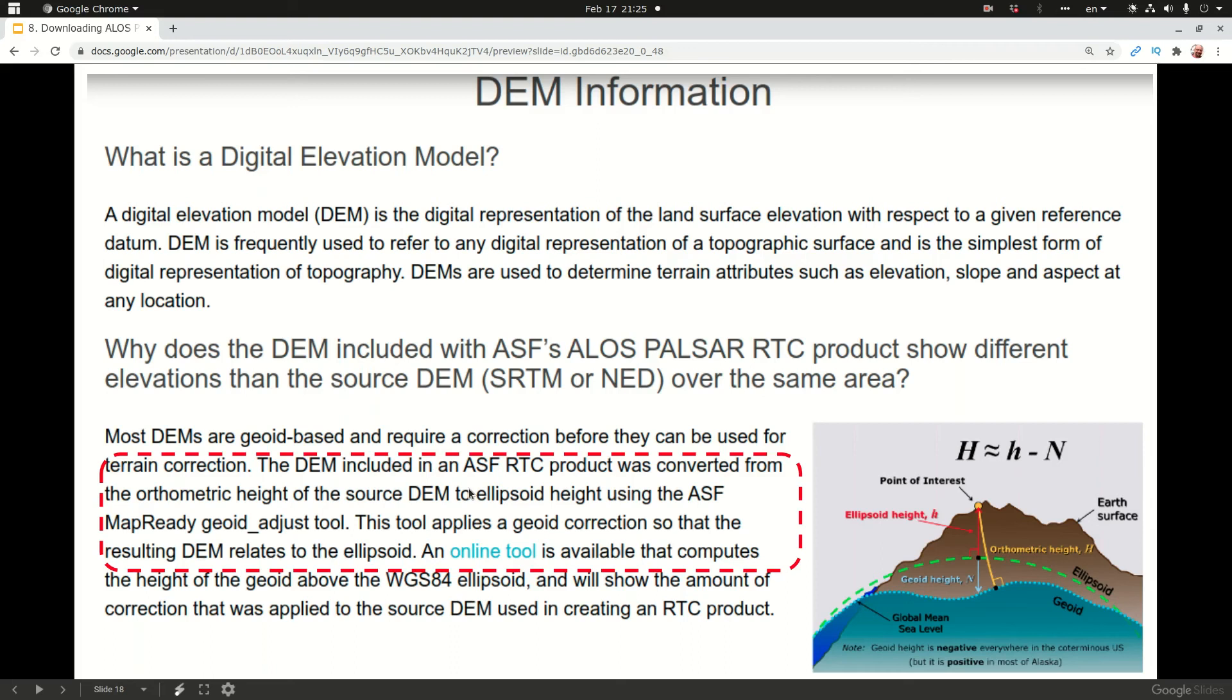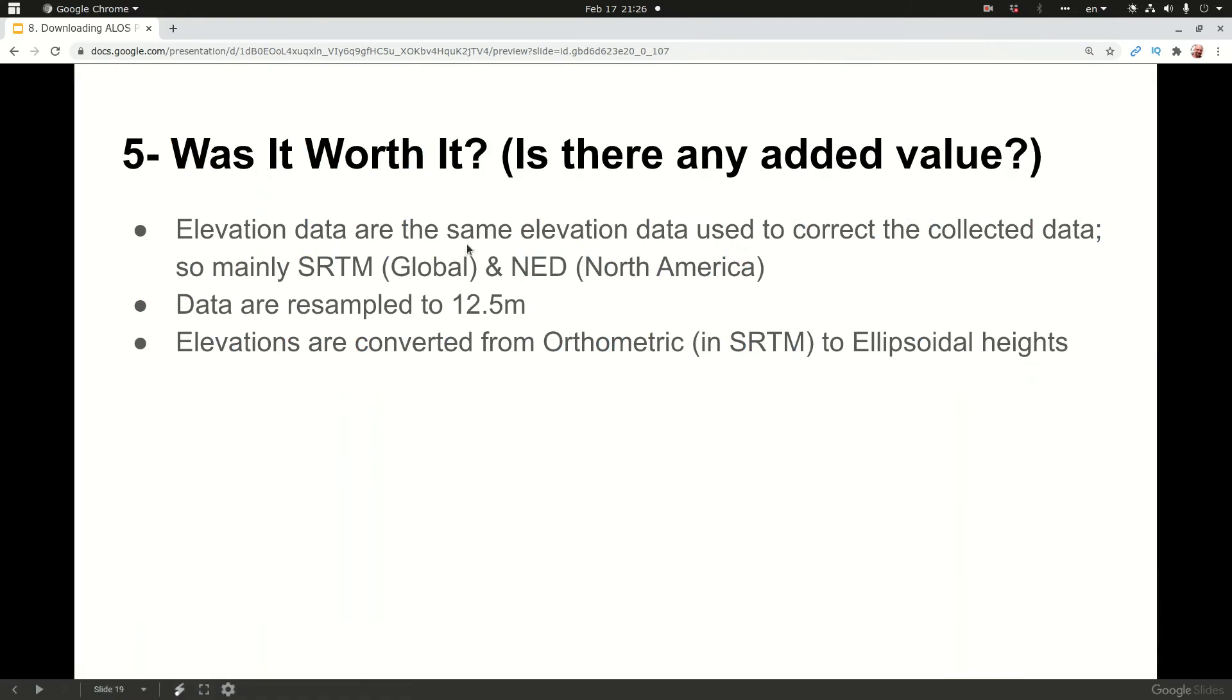The DEM included is basically the source DEM. It's just converted from orthometric height into ellipsoid height and it's resampled to 12.5 meters. To answer this question, the elevation data are the same elevation data used to correct the collected data, so mainly SRTM and NED are used. What we are getting is a resampled version of SRTM or NED if we're working in North America, and the elevations are converted from orthometric in SRTM to ellipsoidal heights in what we just downloaded.